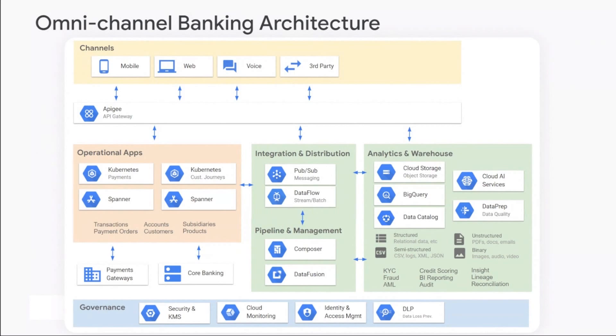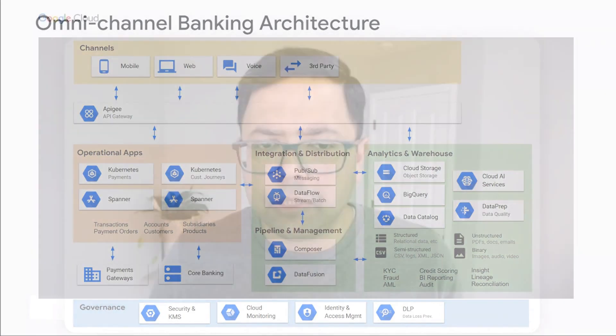This is a representative architecture of an omni-channel banking use case. A customer accesses the same data from different channels — mobile, web — through an API gateway. On the operational side, with a scalable operational database like Spanner, you want scalable compute, which is GKE. GKE and Spanner together is a very common architectural pattern. Then you have integrations into different analytical systems — whether BigQuery via Dataflow, PubSub, and others. We provide seamless integration into other GCP services. Governance is offered through security, KMS, and other services.